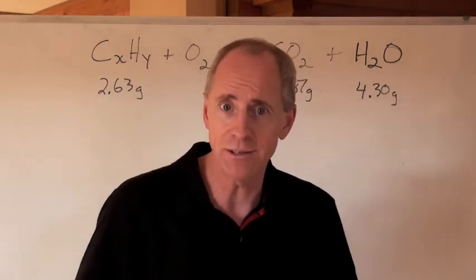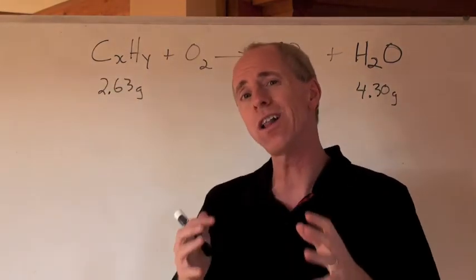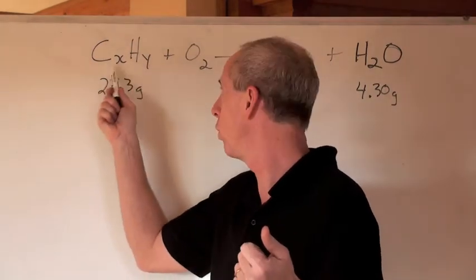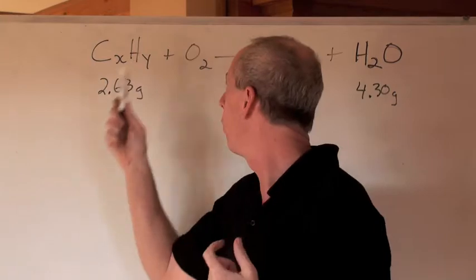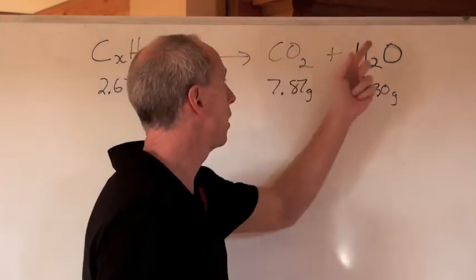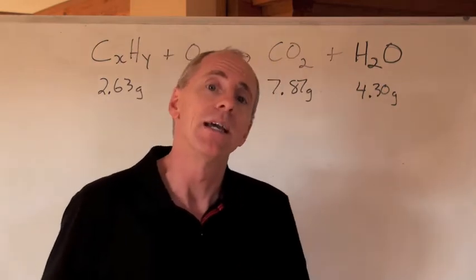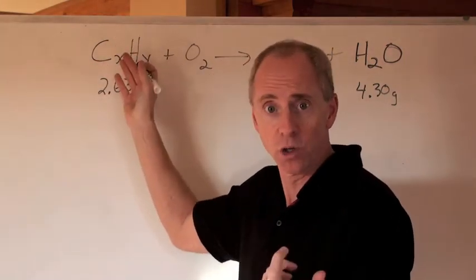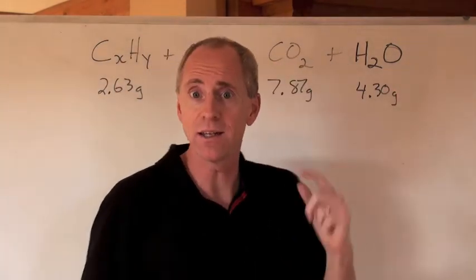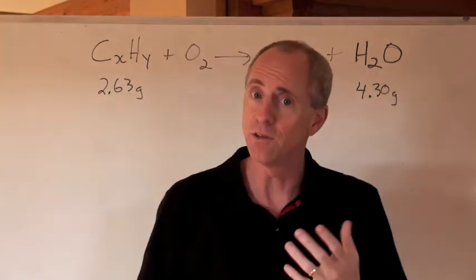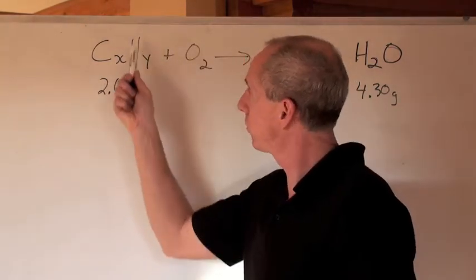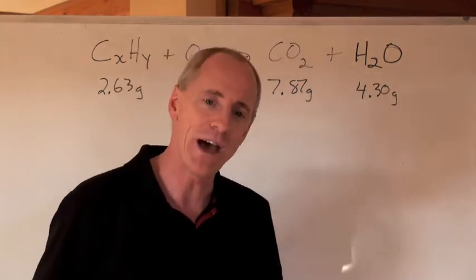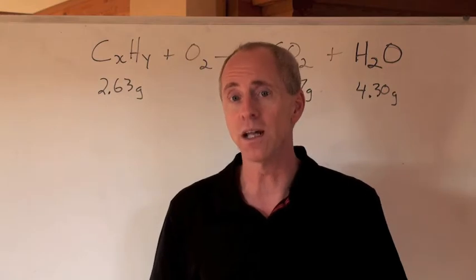I've got a compound with carbon and hydrogen in it, and I don't know what the formula is. I'm going to abbreviate it as CxHy. When I combust it, it forms carbon dioxide and water. All of the carbon from the combustion gets found in the CO2, and all of the hydrogen gets found in the water. You're given masses: 2.63 grams of that compound undergoes combustion, forming 7.87 grams of CO2 and 4.3 grams of water. From that information, you're supposed to determine the empirical formula.